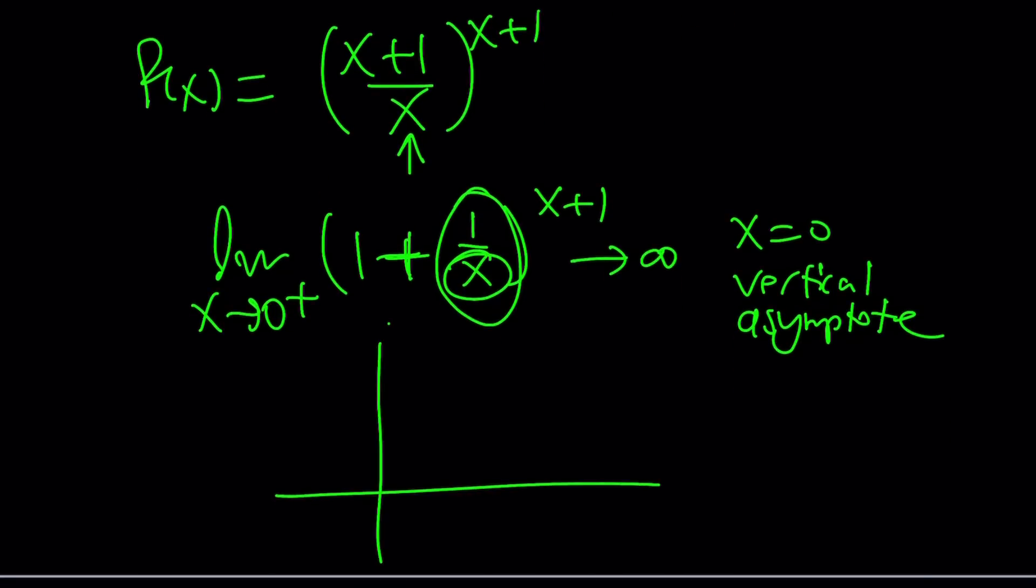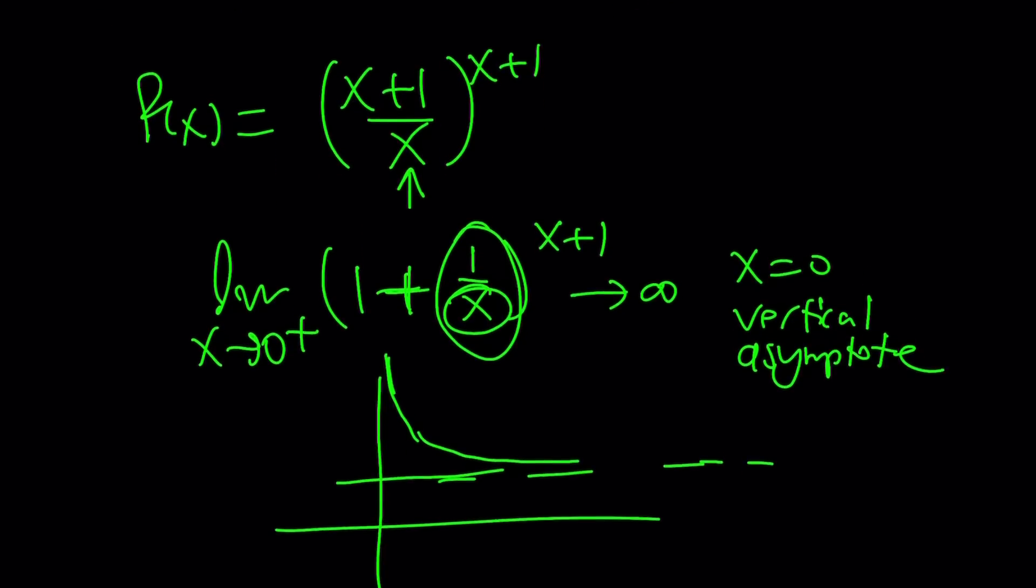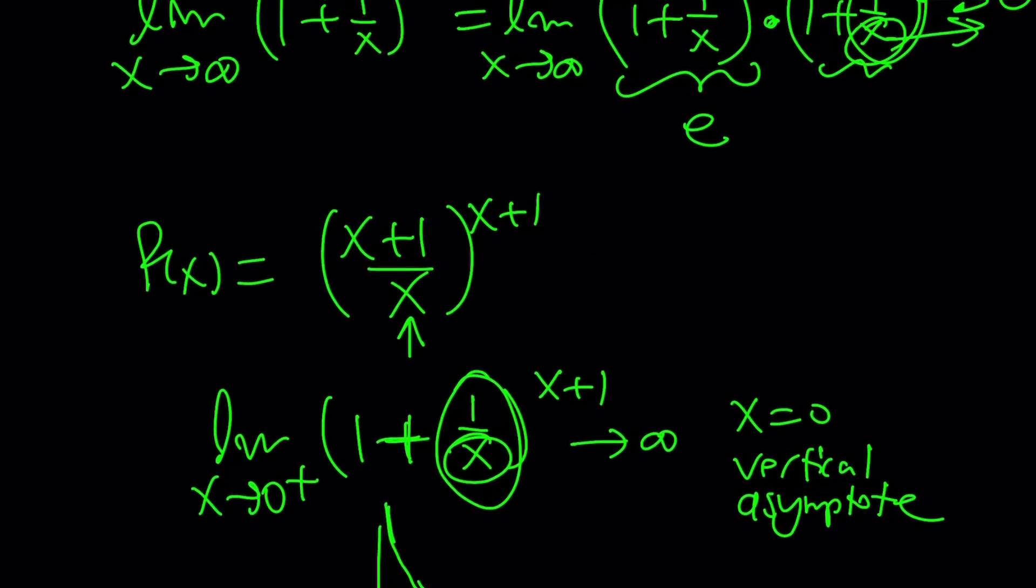So this is going to approach positive infinity. So in other words, we have a function that actually comes from infinity, so it's going to decrease, because eventually it's going to approach y equals e, which is the horizontal asymptote, the limit at infinity.